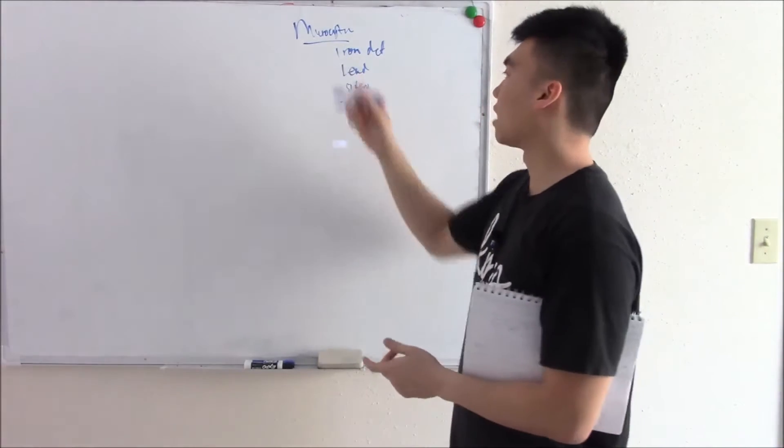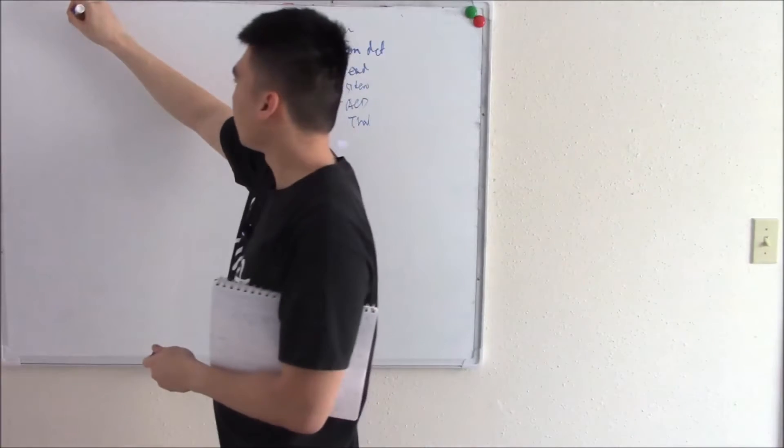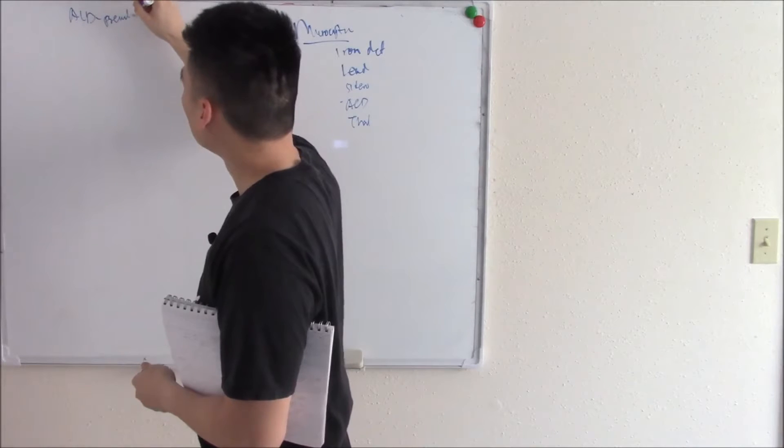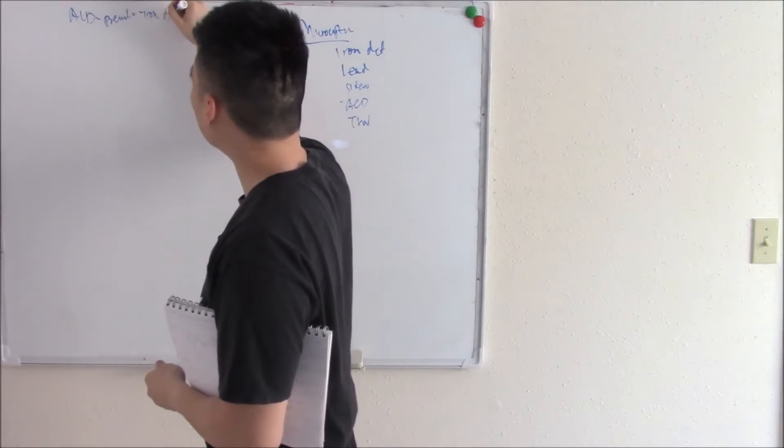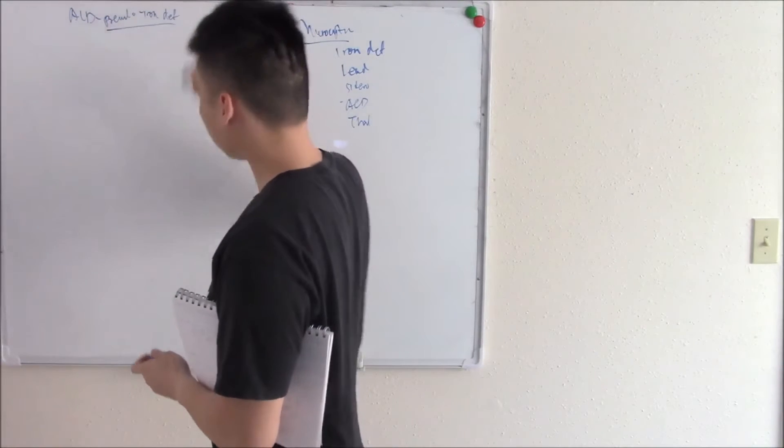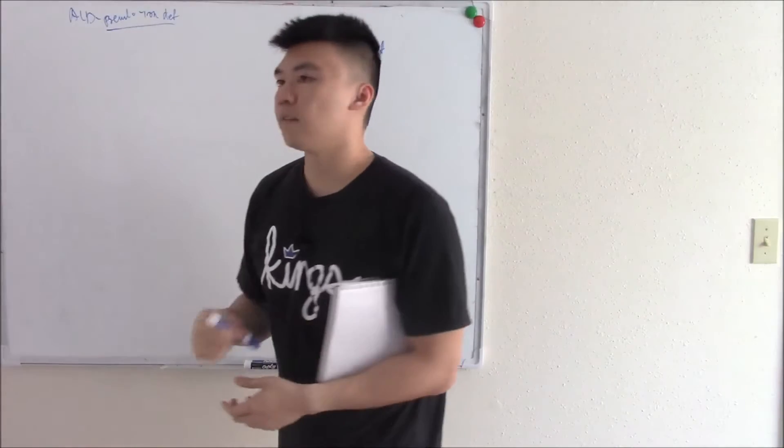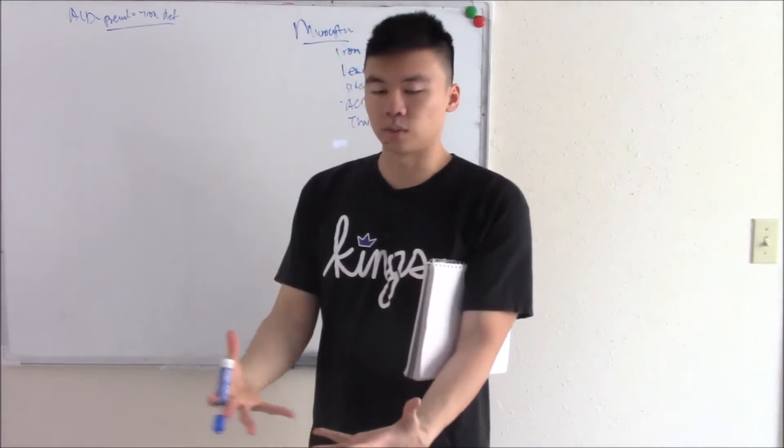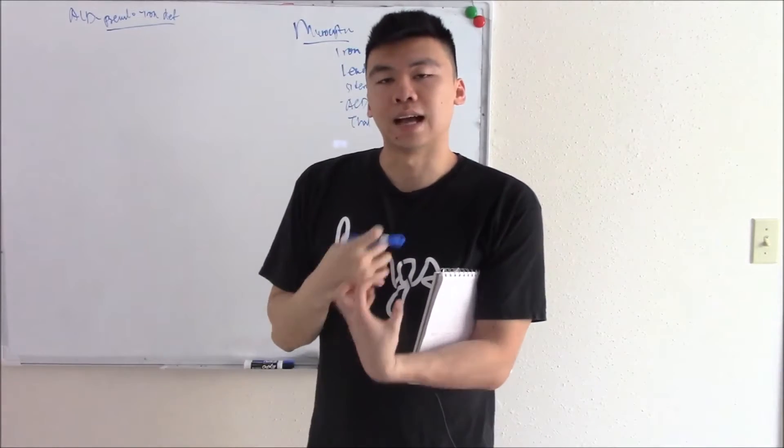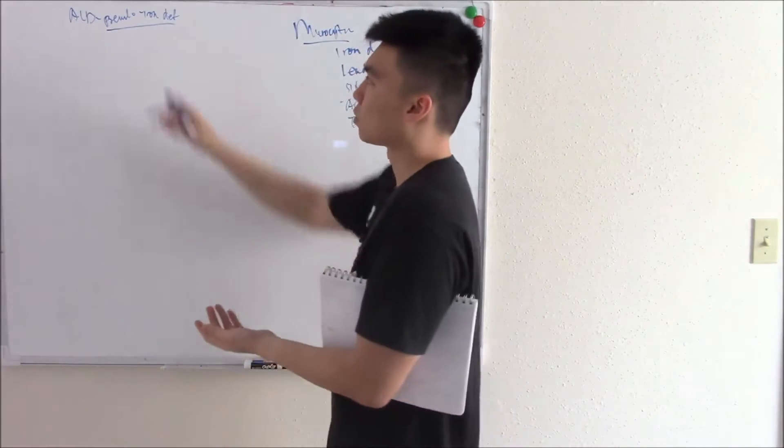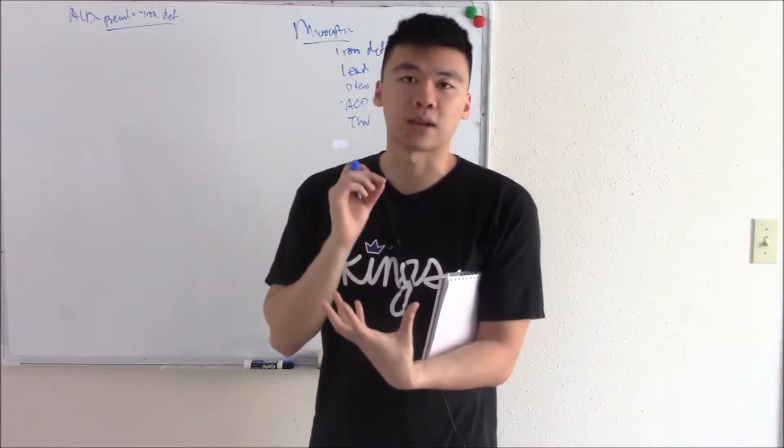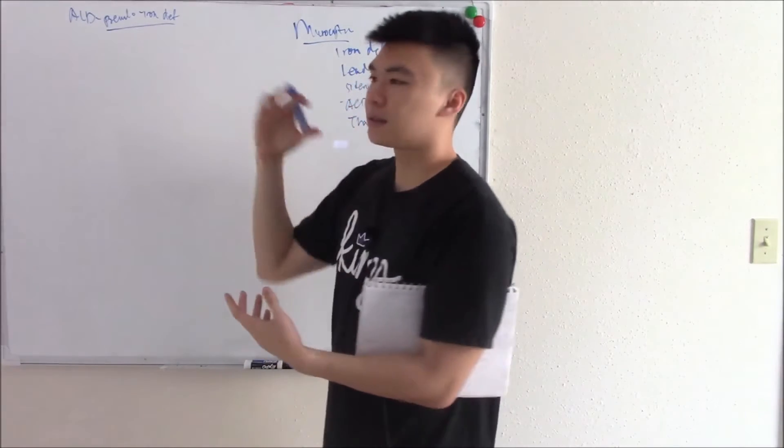Anemia of chronic disease is very similar to iron deficiency. In fact, anemia of chronic disease is kind of like, I like to think of it as pseudo iron deficiency. Anytime you have chronic disease or chronic infection your body will take iron from the blood and store it as ferritin. You have a lot of iron you just can't reach it. Why does it do that?